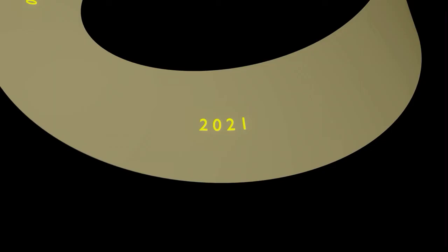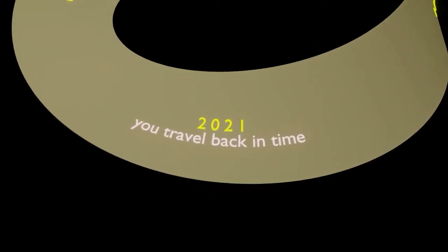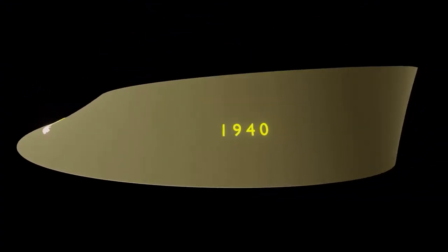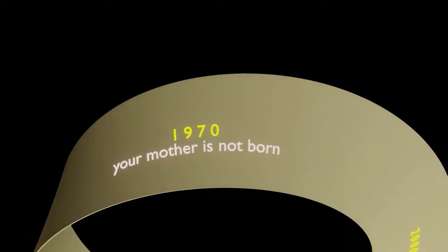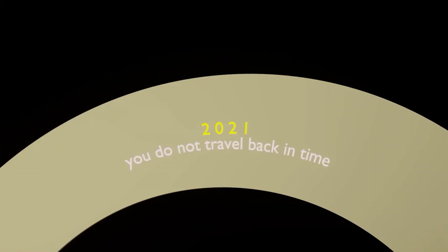Suppose in 2021 you gain access to a time machine for unknown reasons, and you decide to travel back in time to kill your grandfather when he was still a child — still, for unknown murderous reasons. So now you're back in 1940 and you kill your grandfather. If your grandfather is dead as a kid in 1940, in 1970 your mother can't have been born, and in the year 2000 you can't have been born. So in 2021, there was no you to travel back in time.